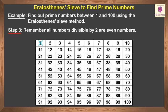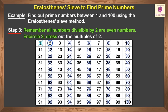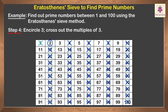Step 3: Remember that all numbers divisible by 2 are even numbers. Encircle 2. Cross out the multiples of 2. Step 4: Encircle 3. Cross out the multiples of 3.